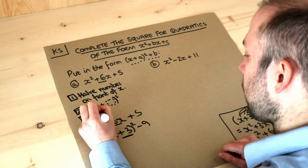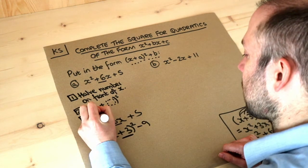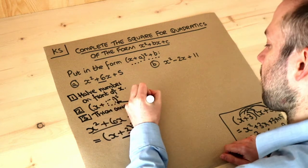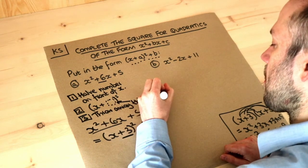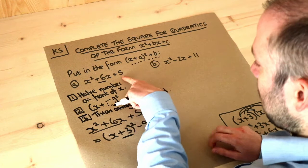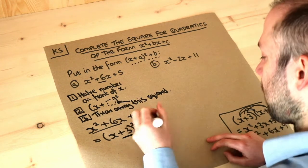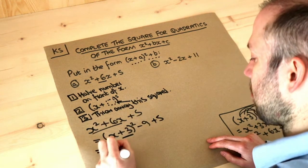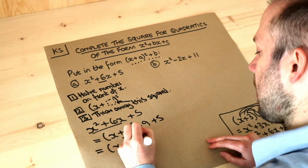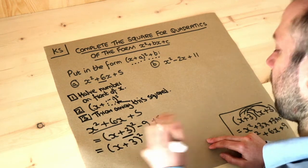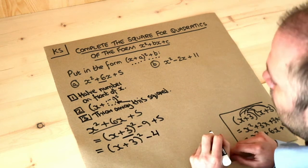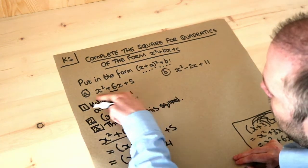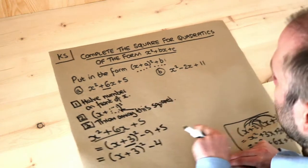So we subtract this number squared. We've still got the plus five here, minding its own business — the plus five is still there. Then we simplify: x plus three squared, and minus nine plus five is minus four. So that's the final answer. If you were to expand this out, we would see that we get the original quadratic form.